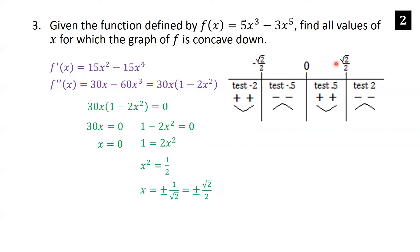We use 0 and plus or minus root 2 over 2 as cutoff points to determine concavity in each interval formed by these three values, since these are where the second derivative is zero — they're potential inflection points. For example, testing x equals 2 in the second derivative: 30 times 2 is positive, and 1 minus 2 times 4 is negative, so the product is negative, meaning the function is concave down.